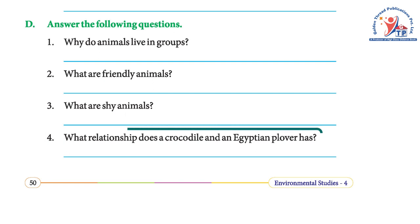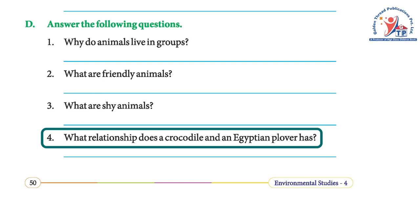Friendly animals are those that allow us to go near them or feed them. Shy animals are those that run or hide when they see people coming near them. The Egyptian plover and the crocodile share a mutual relationship — the plover feeds on bits of decaying meat stuck in the crocodile's teeth, so the plover gets its food and the crocodile gets its teeth cleaned.